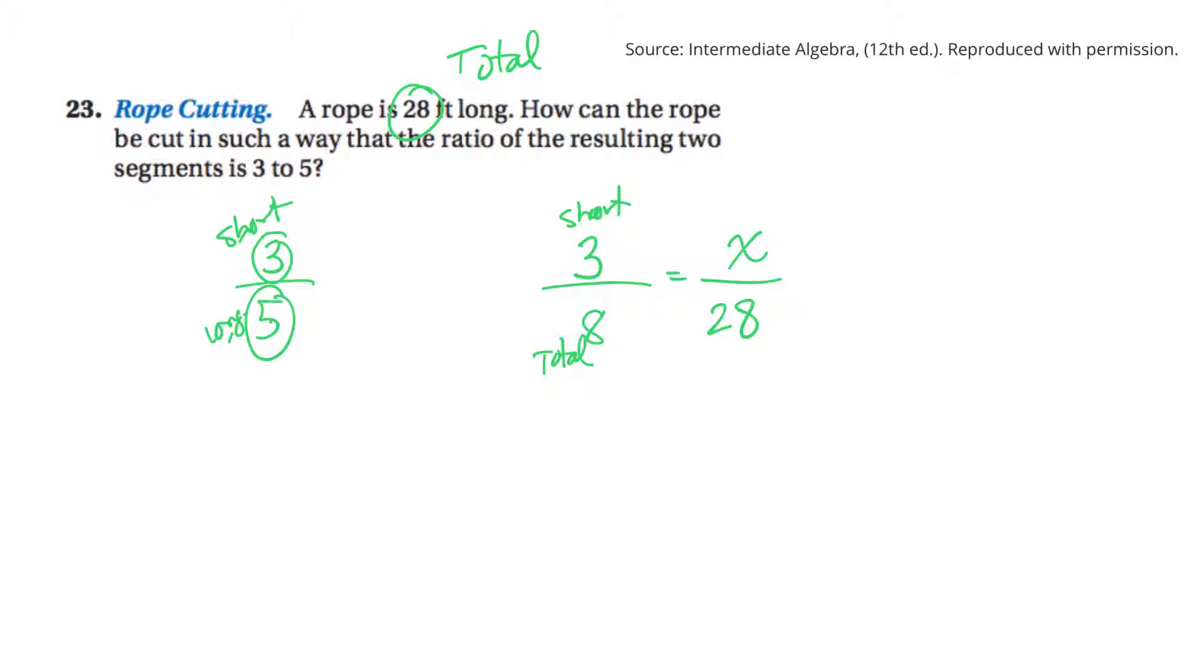Again, to solve this, I can find the lowest common denominator. I'm just going to multiply both sides by 28 times 8. So on this side, the 8s cancel, and I have 28 times 3. On the other side, the 28s cancel, so I'm left with 8x. I'll divide both sides by 8.